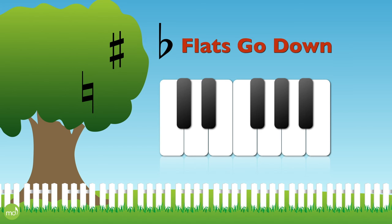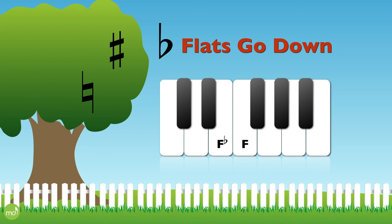Now let's watch the flats going down the piano keys. B goes down to B flat, A to A flat, G to G flat, F to F flat. Hey, F flat is a white key too. E to E flat, and D to D flat.